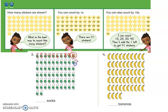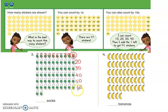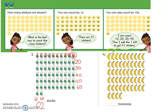So all I need to do now is count by tens: ten, twenty, thirty, forty, fifty, sixty. Now I have to change my count because there is no whole row of ten left. I just go sixty-one, sixty-two. So I have sixty-two socks.